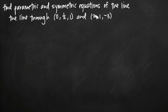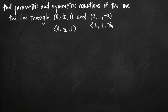The easiest way to do it is with a vector representation of the line that passes through these points. We've got these two points and we can represent them as vectors: (0, 1/2, 1) and (2, 1, -3). But what we really need are the direction numbers that define the direction of the line when the line moves from one point to the other. The way we get those direction numbers is by subtracting the component parts of one point from the component parts of the other.